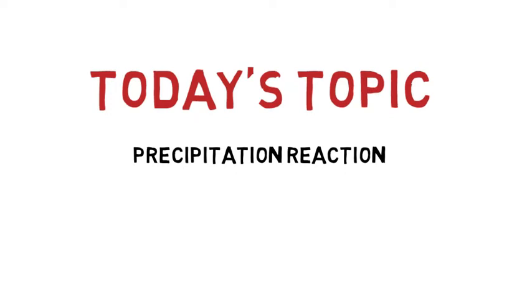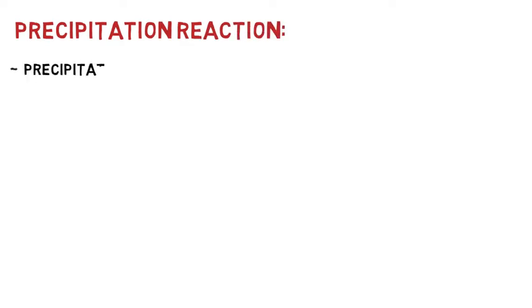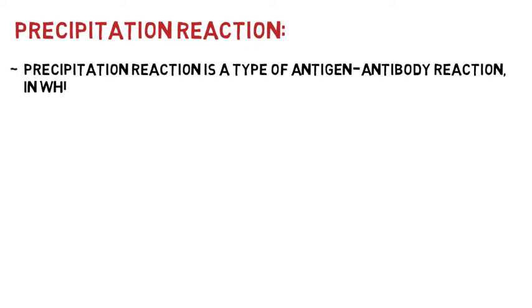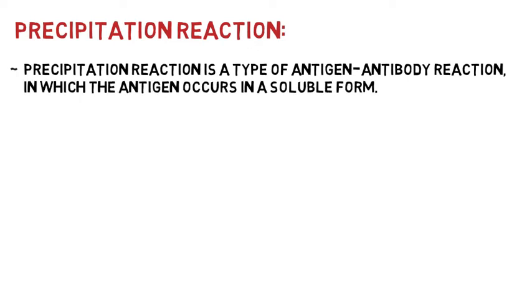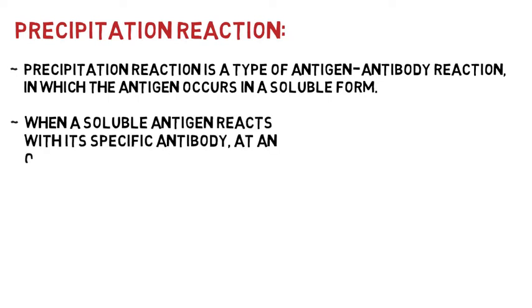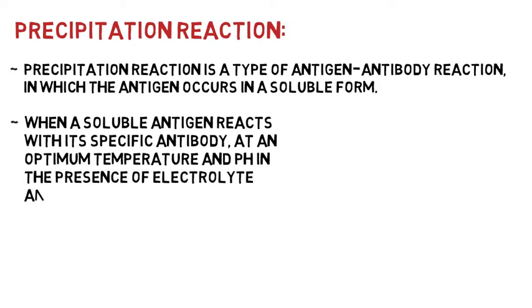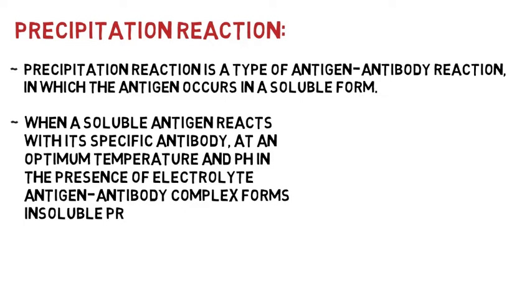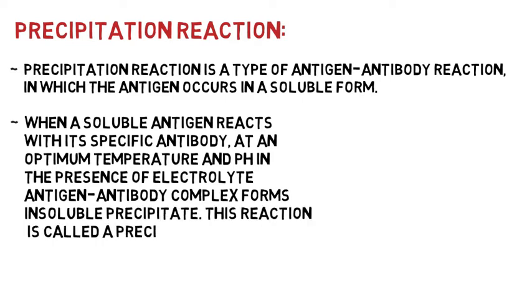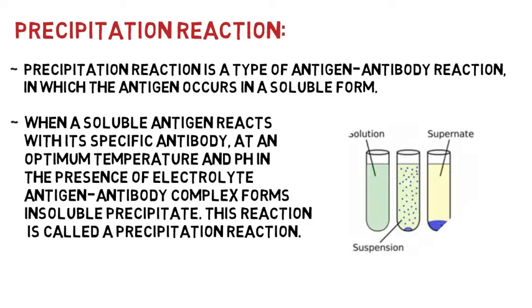As we know, antigens and antibodies are used in diagnostic immunology because of their high specificity. Precipitation Reaction is a type of antigen-antibody reaction in which antigens occur in a soluble form. When a soluble antigen reacts with its specific antibody at an optimum temperature, pH, and in the presence of electrolytes, they form non-covalent bonds and result in insoluble precipitates. This reaction is called Precipitation Reaction.